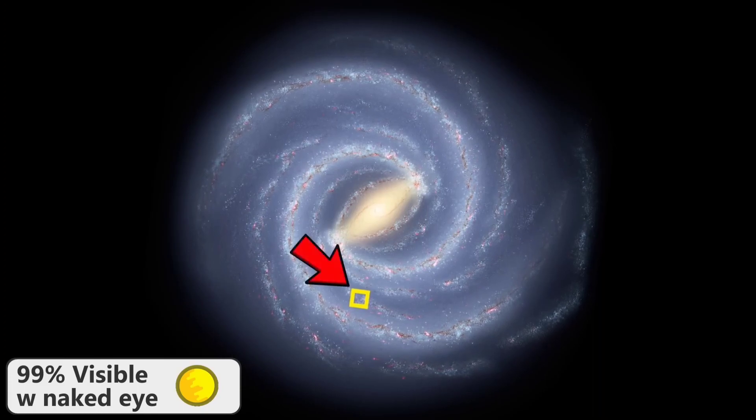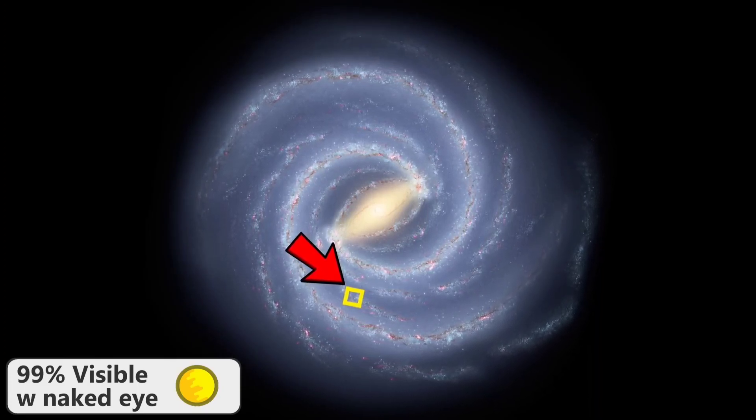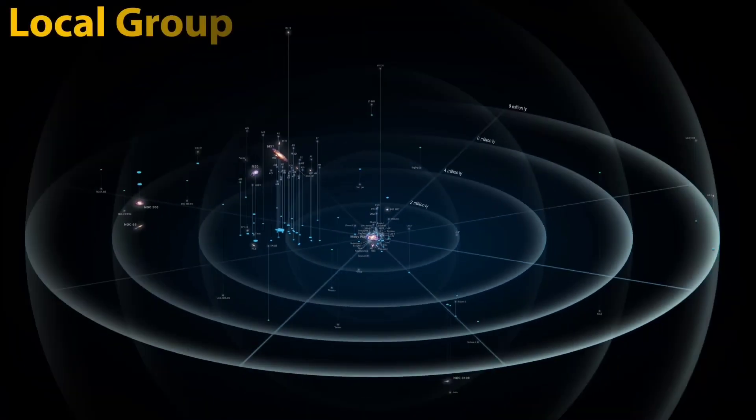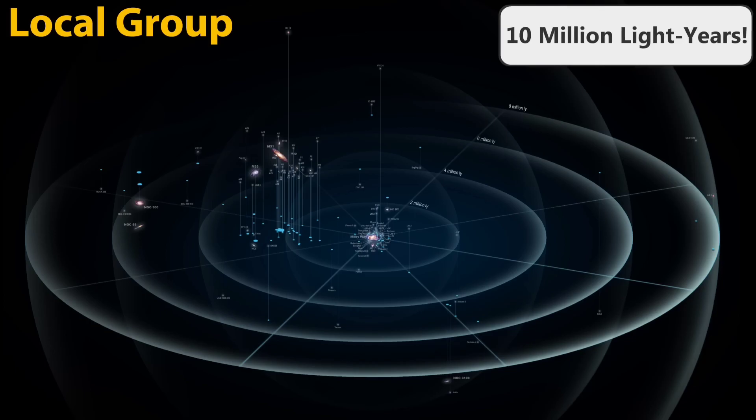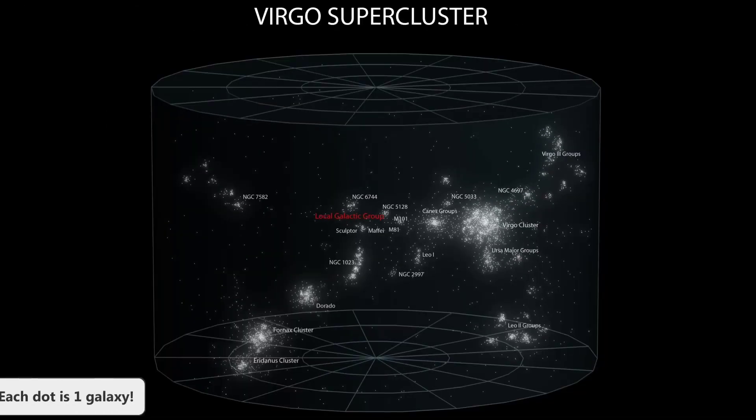Zooming out even further and we arrive at the Local Group of galaxies, a collection of 54 different galaxies that is about 10 million light years across. But zooming out even further and we can see the Virgo Supercluster, of which the Local Group here is just a tiny segment. There are at least 100 other groups of galaxies just like our own Local Group inside of here, and the distance from one side to the other is a mind numbing 110 million light years.